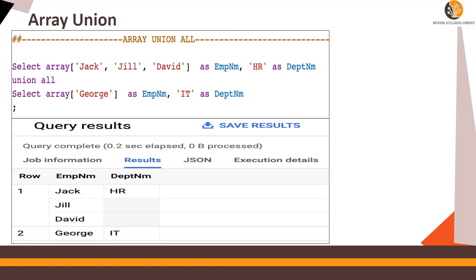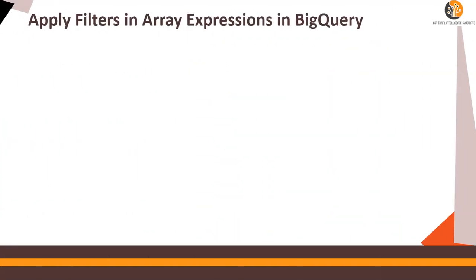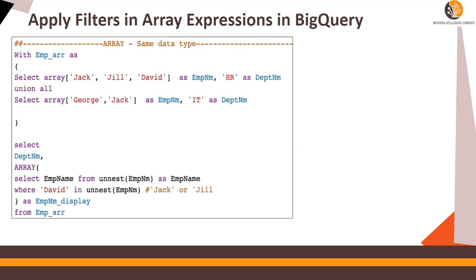Please download the scripts using the Google Drive link mentioned in the video description section below. Now let's apply filters to an array. In order to apply a filter to an array you have to use an expression known as UNNEST. Remember the UNION statement from the previous slide — with employee_array as SELECT for HR employees and IT employees — now I'm going to filter that for a specific person.